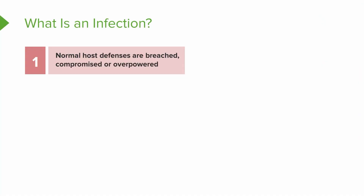So let's break down what an infection actually is. We talked about what host defenses are — the intact skin, the cilia, the gastric acid, the immune system. Something happens that breaches, compromises, or overpowers those defenses. Normally, all those host defenses keep us pretty safe — we can fight off lots of things. In fact, your immune system can actually defeat some cancers. So infection means your normal host defenses are breached, compromised, or overpowered.